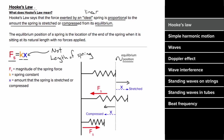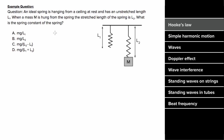Here's an example problem involving Hooke's Law. An ideal spring is hanging from the ceiling at rest, and it has an unstretched length L1. You then hang a mass m from the spring at rest, and it stretches the spring to a length L2. What is an expression for the spring constant of the spring?